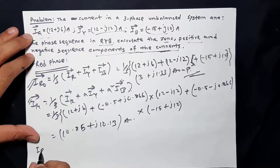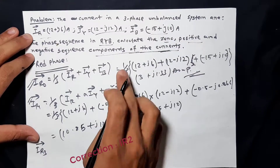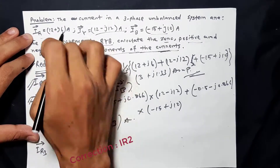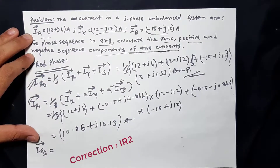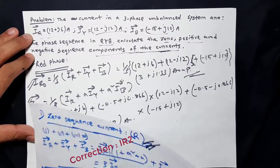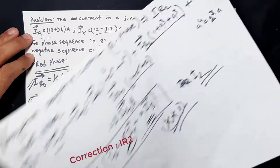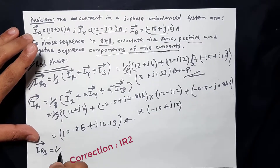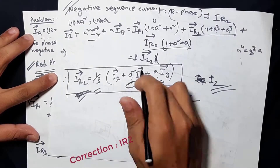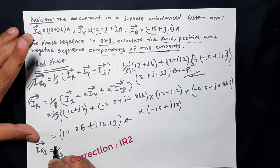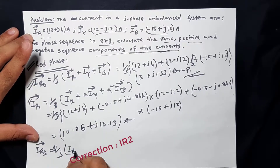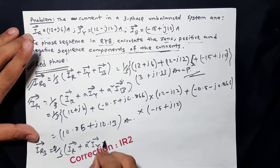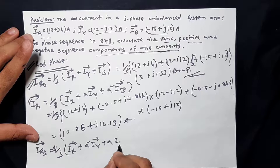So negative sequence current IR3: the negative sequence current is IR3, and IR3 is the negative sequence component squared. So just simply 1 by 3 — this is S squared, so this is the derivative of IR3, which is 1 by 3.